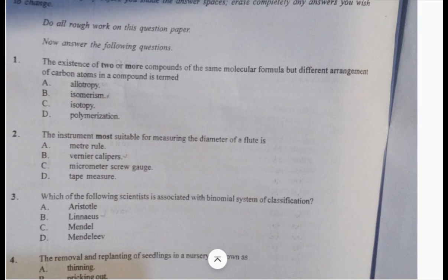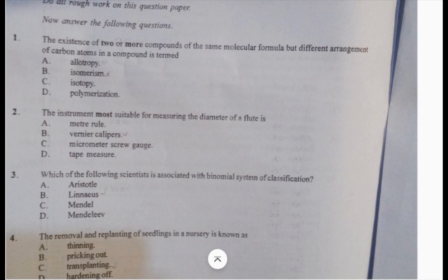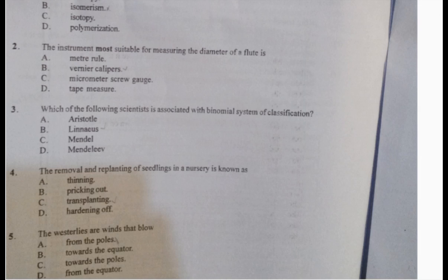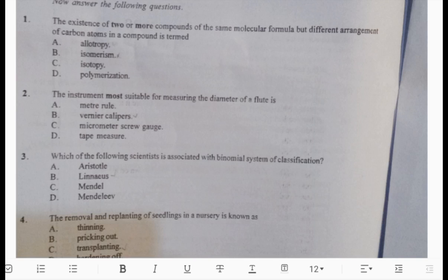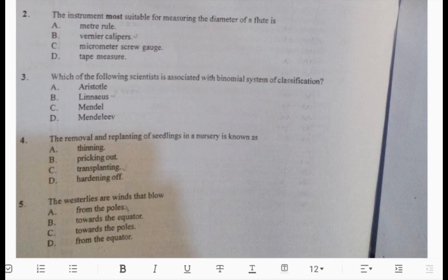Number two: the instrument most suitable for measuring the diameter of a fluid is the Vernier caliper. Number three: which scientist is associated with binomial system of classification? The answer is B, Carolus Linnaeus. Number four: the removal and replanting of seedlings in a nursery is known as transplanting.